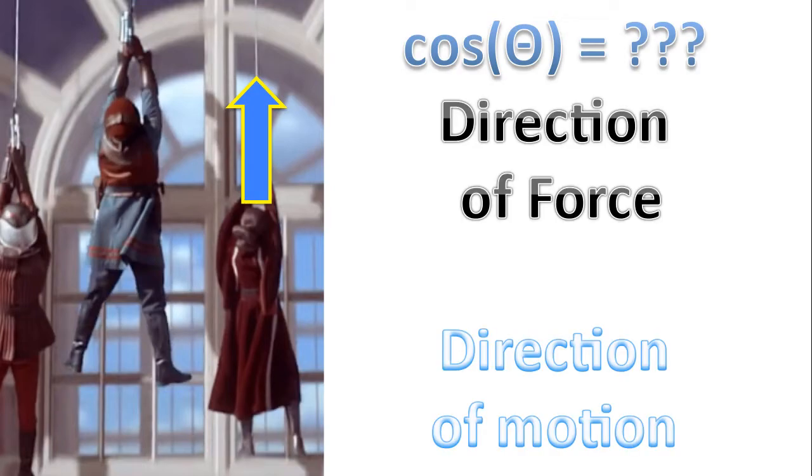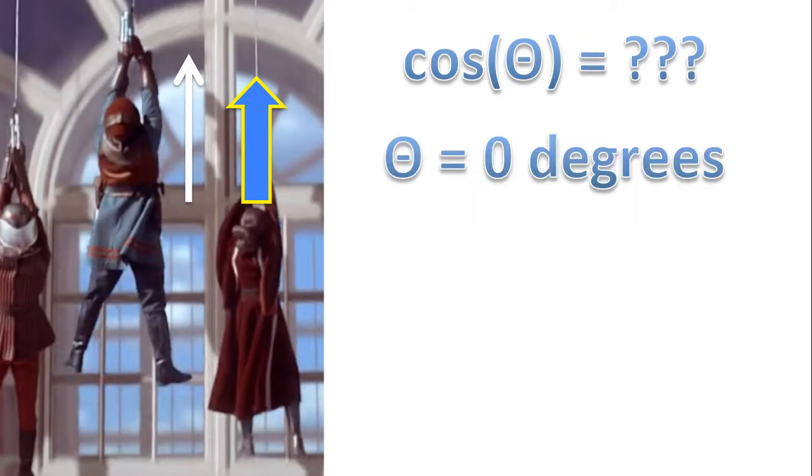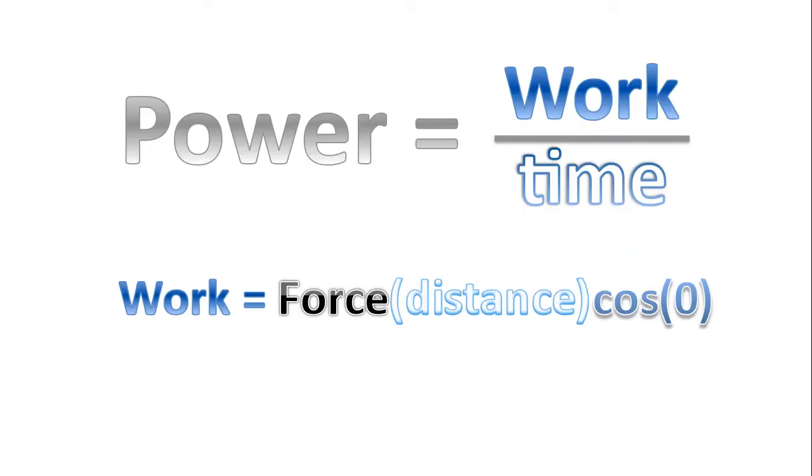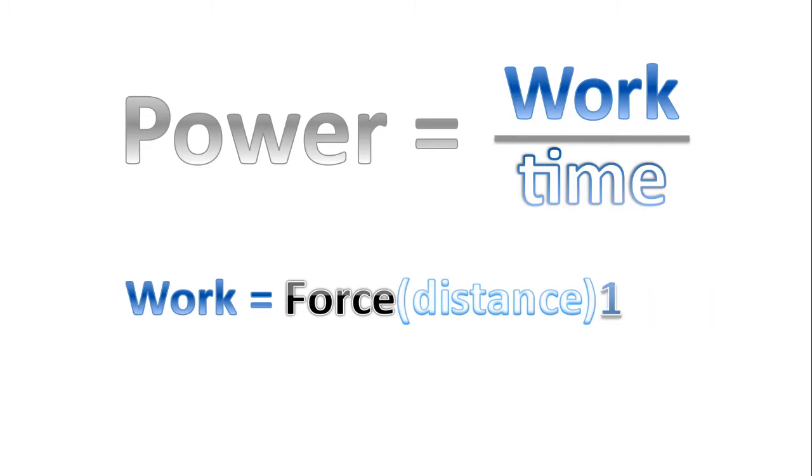Well, the angle in consideration is the angle between the direction of force and the direction of the movement. Well, the force is acting upwards, and the white arrows indicating the direction of motion. Therefore, since these two vectors point in the same direction, the force vector and the direction of movement, the angle is zero. Remember that cosine of zero is equal to one. And so substituting zero degrees, we end up with work equals force times distance.